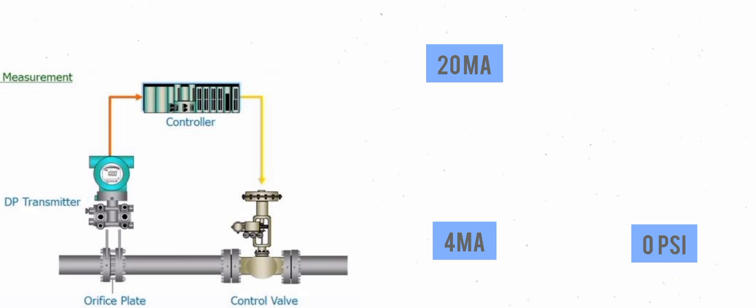Depending on the range of measured pressure, a 4 milliamp signal would equal a measured differential pressure of 0 psi and a 20 milliamp signal would equal the maximum measurable value. In this case, we'll say that the maximum differential pressure is 100 psi.